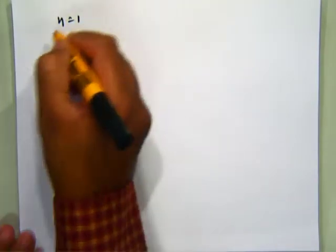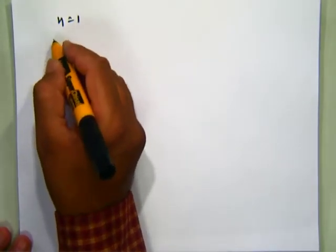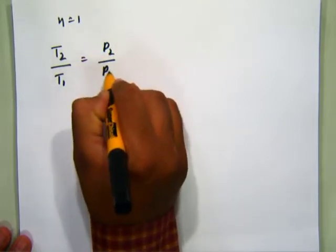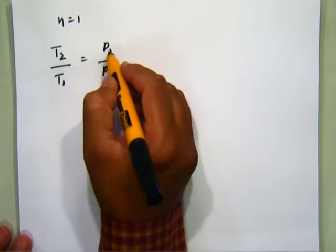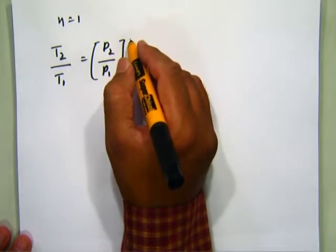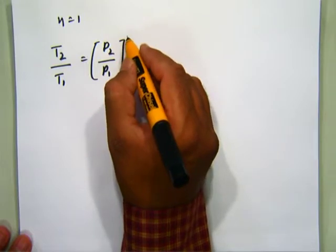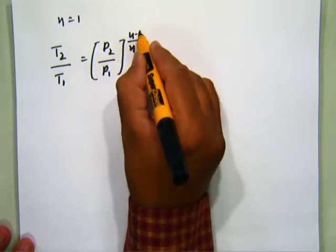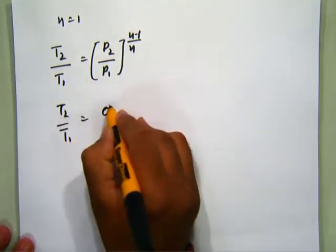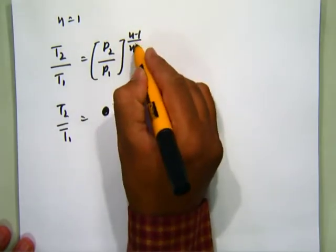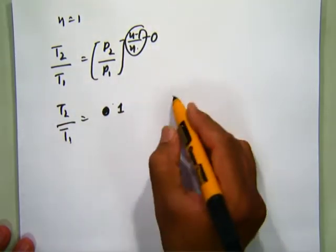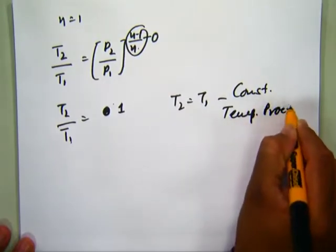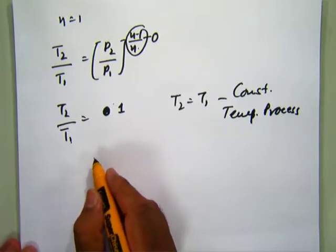Now suppose I take n equals 1. The exponent (n-1)/n becomes 0, so T2/T1 equals 1, meaning T2 equals T1. It is the constant temperature process — the isothermal process.